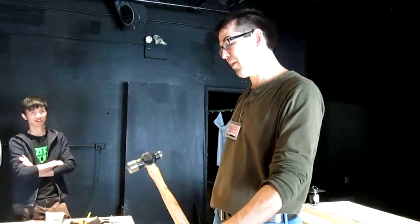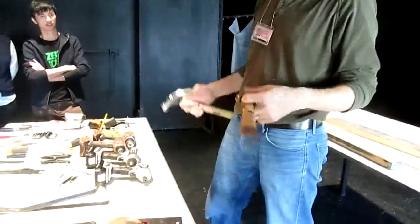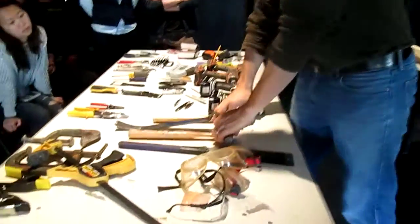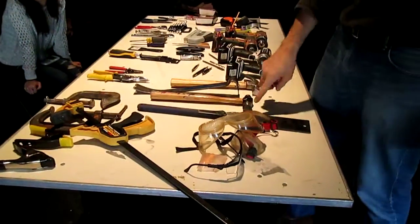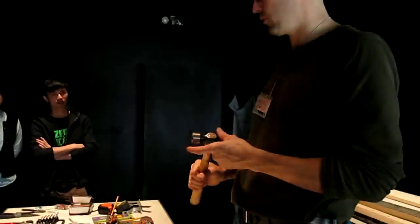This is called a ball peen hammer. It's really for shaping metal, and we don't really use it that often. Just so you know, it's different. There are different tools. You don't use this for driving nails anyway. It's really for shaping metal.